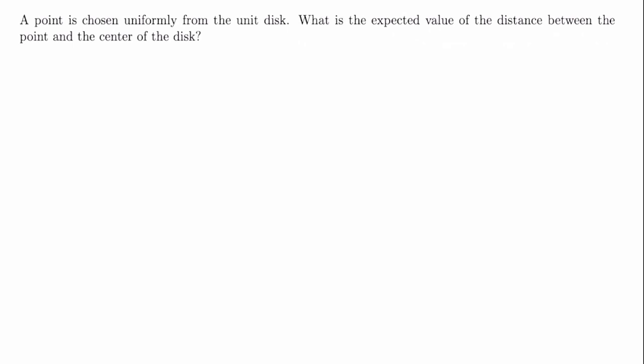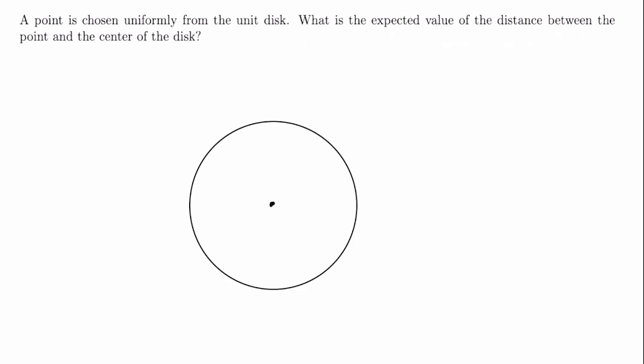Before we go ahead and solve this problem, let's think a bit about what it actually means to choose a point uniformly at random from the unit disk. If we draw the unit disk and its center, we can think about a sampling procedure where we pick a radius uniformly at random. There are a bunch of radii here — we just pick one of them at random, and then given that we've chosen that radius, we pick a point uniformly at random on that radius. Since the length of this radius is 1, this would actually be the same as sampling from a uniform distribution from 0 to 1.